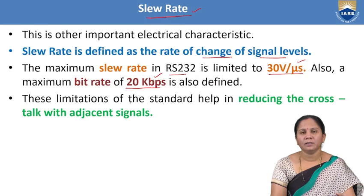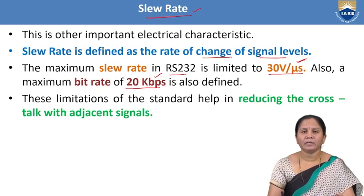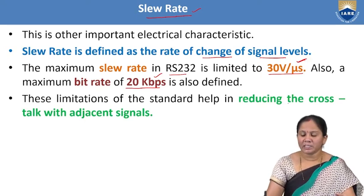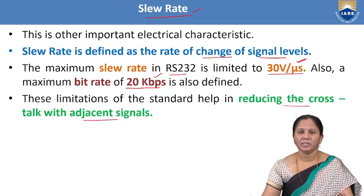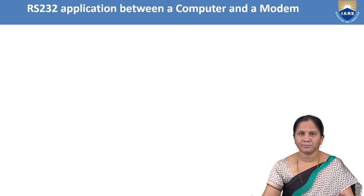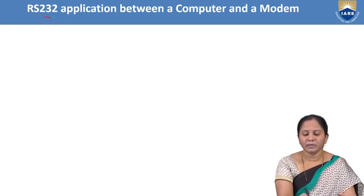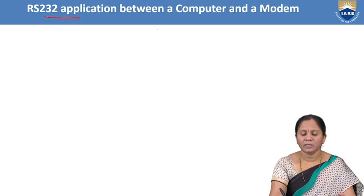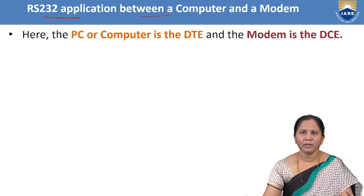By using this serial communication standard with these specifications of bit rate and slew rate, it is capable of reducing crosstalk with adjacent signals. We will also see the different applications of RS-232 between computer and modem.